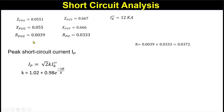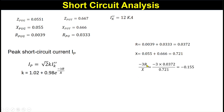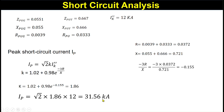Up to the fault point there are two resistances: the resistance of the grid and the resistance of the transformer. The sum of these two resistances is 0.0372. Similarly, the sum of the reactances — the grid reactance and the transformer reactance — is 0.721. The ratio −3R/X equals −0.115. Substituting into the k equation gives k = 1.86. Putting this into the ip equation, the peak short circuit current ip = 31.56 kilo-amperes.